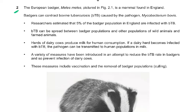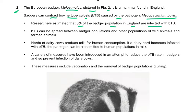Coming to question number 2: the European badger, Meles meles, pictured in figure 2.1, is a mammal found in England. Badgers can contract bovine tuberculosis caused by the pathogen Mycobacterium bovis — we studied that at AS level. Researchers estimated that 5% of the badger population in England are infected with bovine tuberculosis or BTB. BTB can be spread between badger populations and other populations of wild animals and farmed animals.